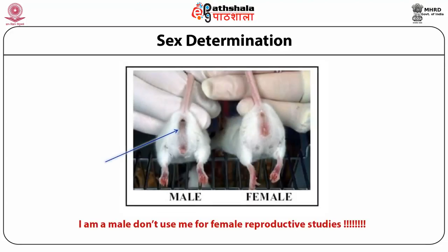An important criterion is how to differentiate male and female mice. In males, the distance between the anogenital opening is larger; in females, it is shorter. This is critical in animal research because you cannot perform male-specific studies in females if you don't identify the sex properly.